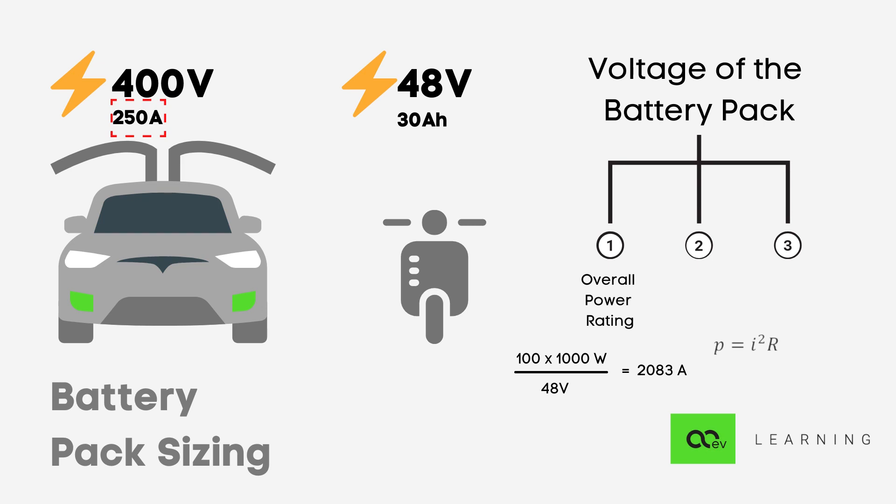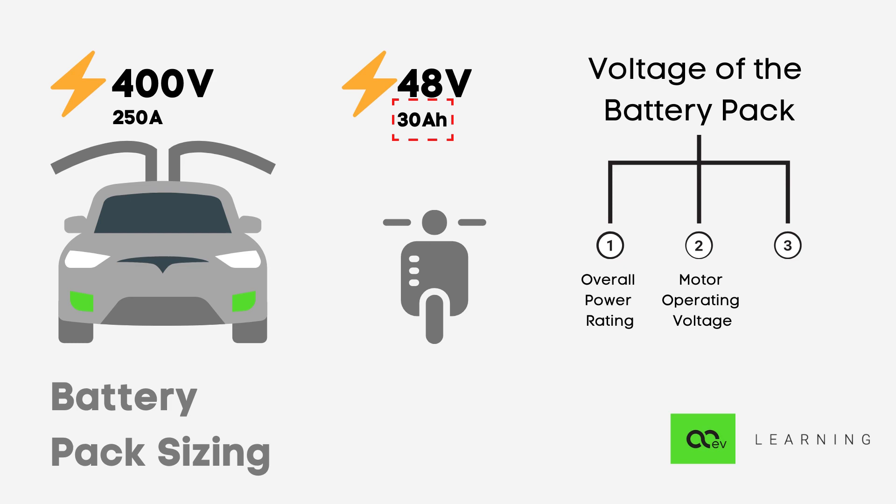That is the reason Tesla has a 400 volt battery pack, which brings current down to 250 amperes. Secondly, the battery pack voltage is also dependent on the motor operating voltage. If Tesla uses a 400 volt motor powertrain, the battery pack needs to be in close range to 400 volt, or else we would have to step up or step down the voltage. How the motor voltage is decided will be covered in the powertrain session. Second comes the capacity, represented in ampere-hours — just like in cell phones it is mentioned as 2500 mAh or 5000 mAh.